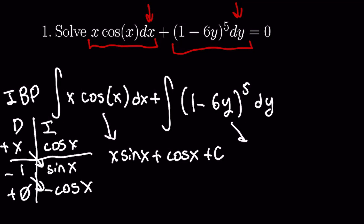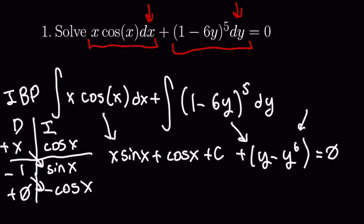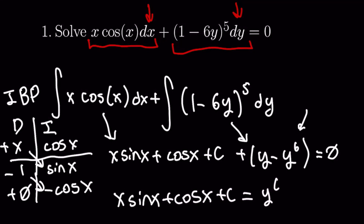The second integral will contribute a plus y minus y to the sixth, and that is equal to zero. As this is impossible to solve for y, we will have to give an implicit solution. So our implicit general solution for this differential equation will be x sine x plus cosine x plus c is equal to y to the sixth plus y. Let's go ahead and move on to our next problem.